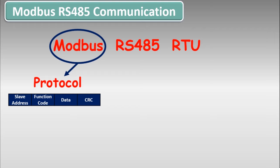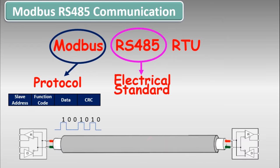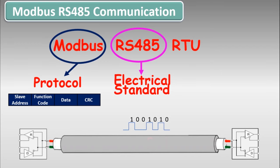Modbus protocol exists in the 7th layer of the OSI model, that is the application layer. RS485 is basically an electrical standard or a physical medium on which Modbus protocol messages move. It includes the electronic circuit, wires, and networking scheme used in the communication. In the OSI model it exists on the first two layers, that is the physical and the data link layer.